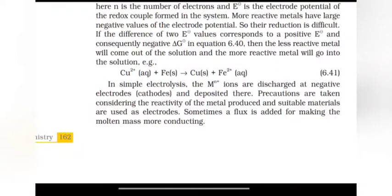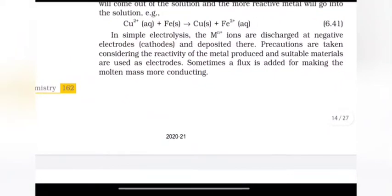More reactive metals have large negative values of the electrode potential. So, their reduction is difficult. If the difference of two E values corresponds to a positive E and consequently negative ΔG in the equation, then the less reactive metal will come out of the solution and the more reactive metal will go into the solution.